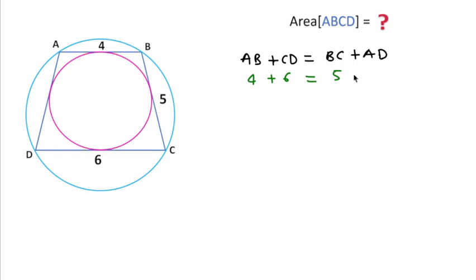Then 4 plus 6 equals 10, and 10 minus 5 equals 5, so AD is 5. Now we can see AD and BC are both equal, so we can say this is an isosceles trapezoid.